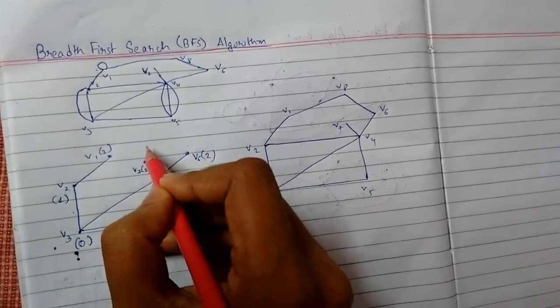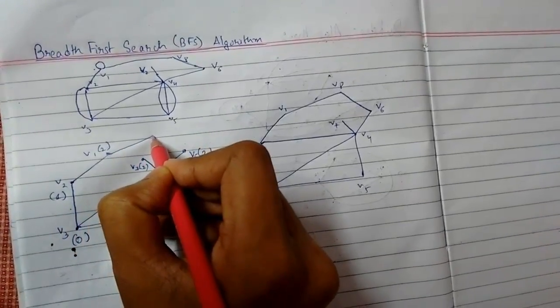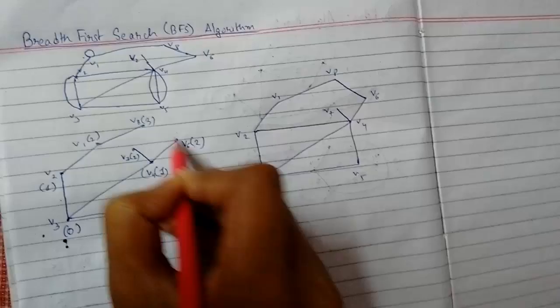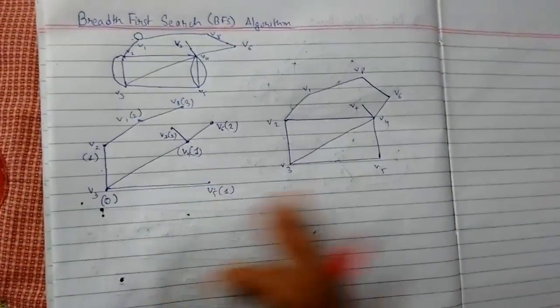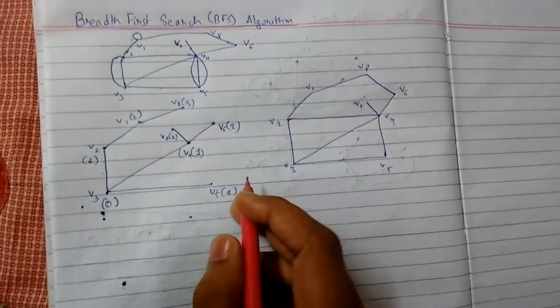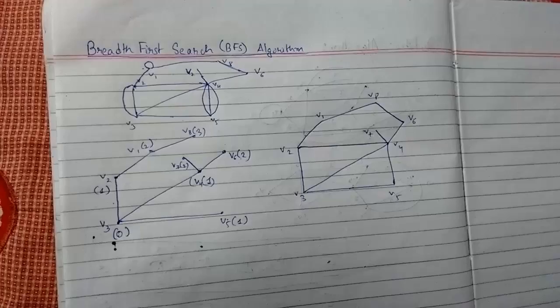From v1 I am going up to v8 and label it as 3. We should not join this. This is the required spanning tree. After that you can remove the labels. This is all about breadth first search algorithm. Thank you for watching.